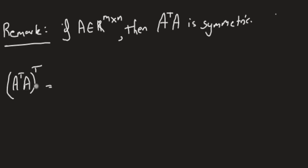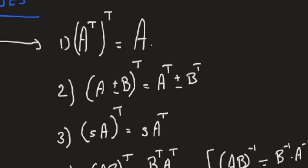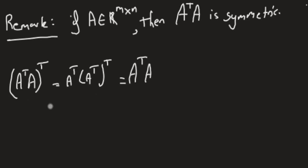Take the transpose of the second matrix, so we get A transpose, then transpose the first one, that is the transpose of the transpose. Now use property 1 saying that the transpose twice cancels out, so we get A transpose A. Hence A transpose A transpose is A transpose A. So the matrix A transpose A is symmetric.